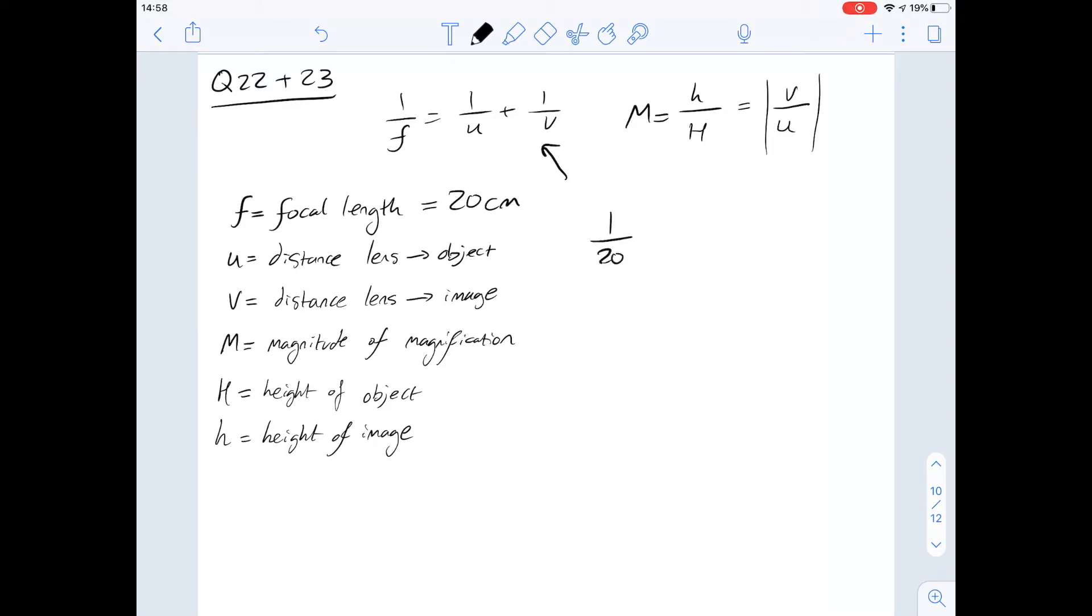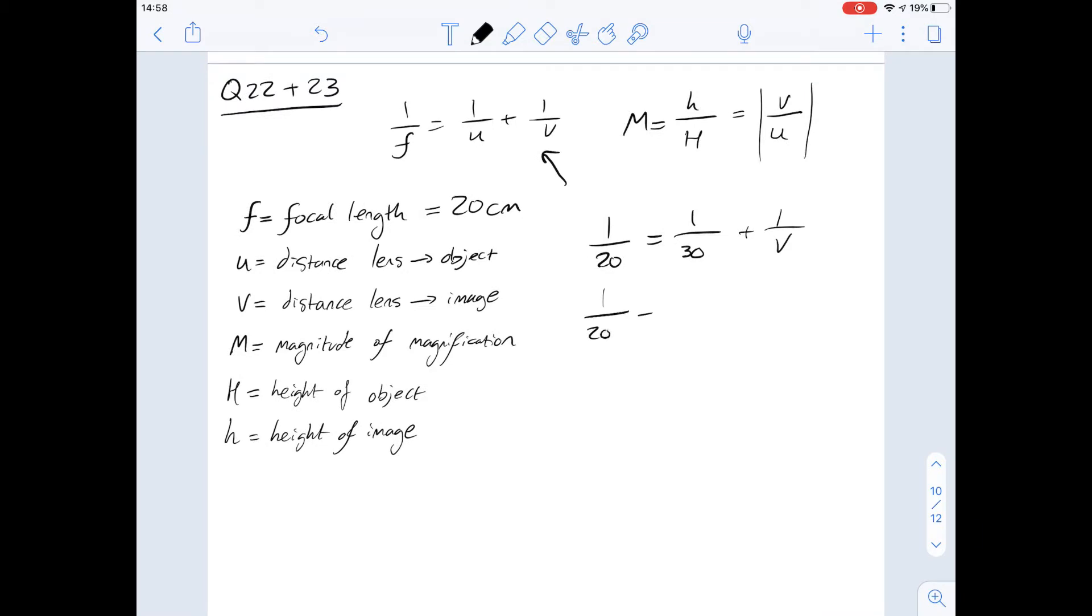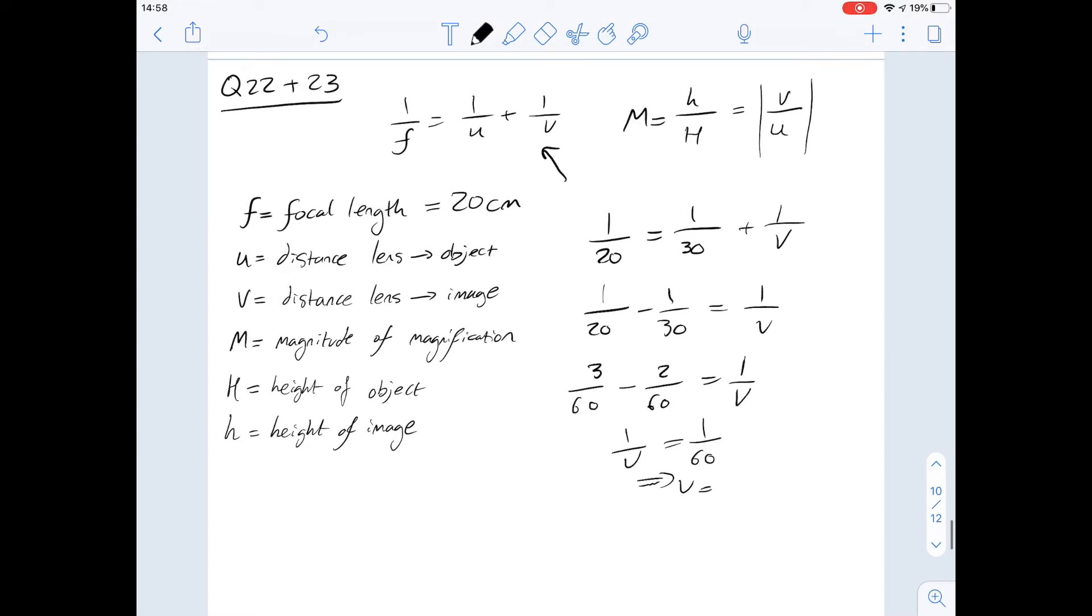We know that 1 over the focal length, which is 20, is going to be 1 over the distance between the lens and the plate, so that's 30 centimeters in this case. That leaves us 1 over V and we'll solve for V. So 1 over 20 minus 1 over 30 is going to be 1 over V. We can change this to 3 over 60 minus 2 over 60 equals 1 over V, therefore 1 over 60. So V is 60 centimeters or answer D.